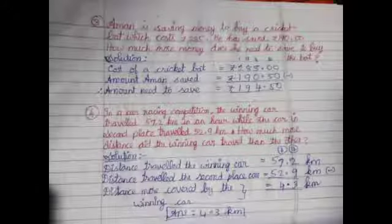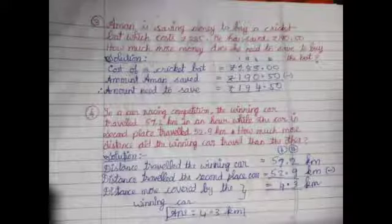Third sum is: Aman is saving money to buy a cricket bat which costs rupees 285.00. He has saved rupees 190.50. How much money does he need to save to buy a bat? The cost of the cricket bat is 285.00 and amount Aman saved is rupees 190.50. So amount needed to save, do the subtraction. The amount is rupees 94.50.